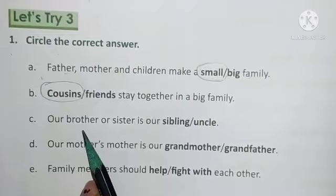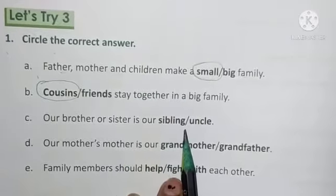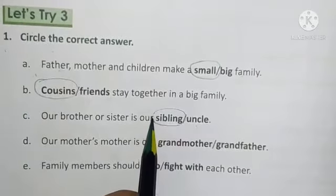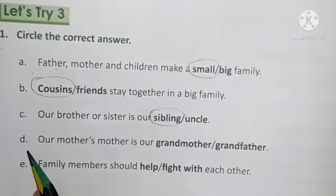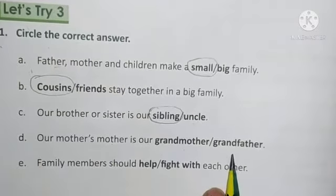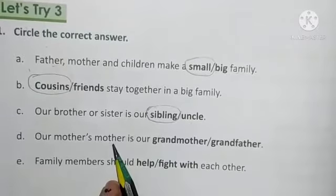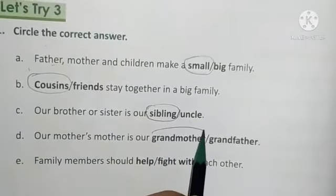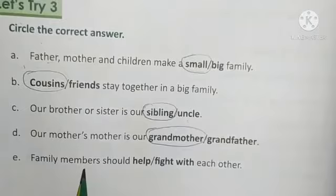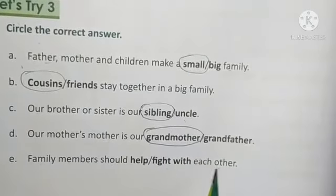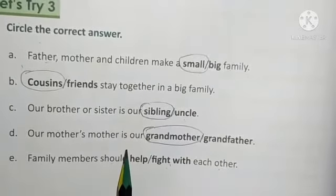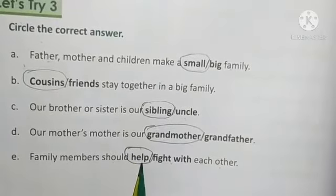Number C — our brother or sister is our dash. Sibling or uncle? Yes, sibling. So we will circle on sibling. Number D — our mother's mother is our grandmother or grandfather? Yes, grandmother. So we will circle on grandmother. Number E — family members should dash each other. Help or fight? Yes, family members should help each other. So we will circle on help.